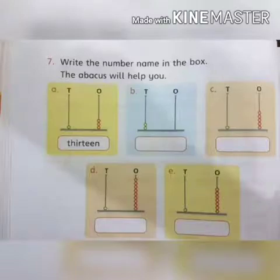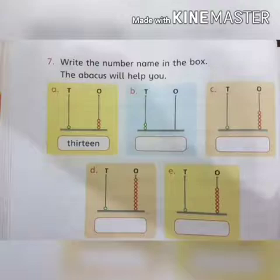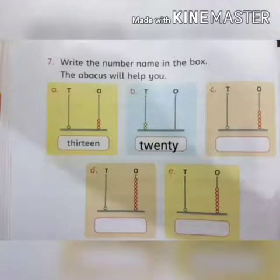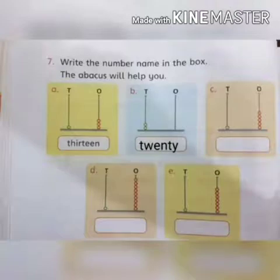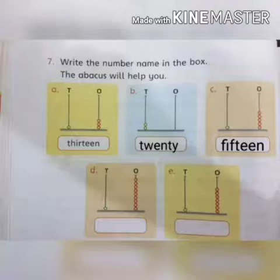Question number seven: Write the number name in the box. The abacus will help you. There is one bead on the tens rod and there are three beads on the ones rod — it makes thirteen. One has been done for you. Next, the abacus is showing two beads on the tens rod and no beads on the ones rod, so we have to write twenty — T-W-E-N-T-Y. Next, the abacus is showing one bead on the tens rod and five beads on the ones rod, so we have to write fifteen — F-I-F-T-E-E-N.